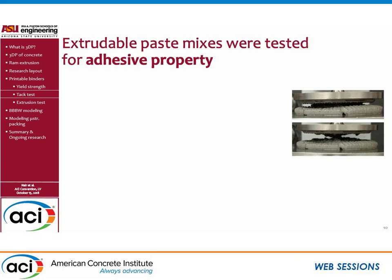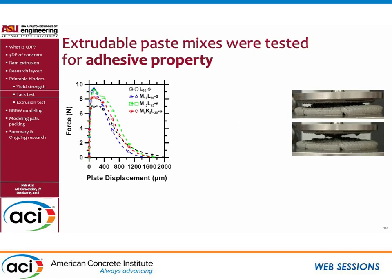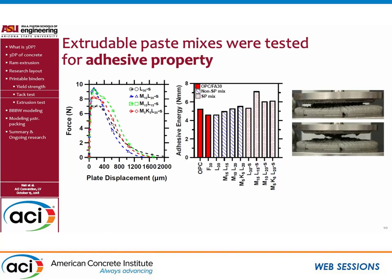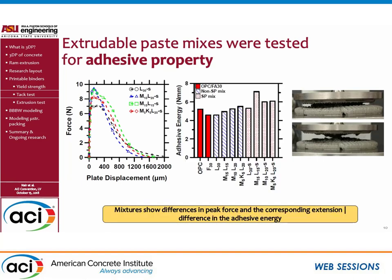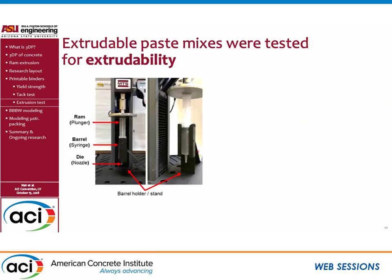For the adhesive property, we performed a tack test where material is placed between two plates which are then separated, and the load is recorded during separation. Different mixes show different peak forces and corresponding deformation before breaking. The adhesive energy is the area under the curve. For printable mixes, especially superplasticizer mixes, there is a slight increase in adhesive energy, which is a characteristic needed for intermixing of the layers — and those mixes are pretty successful in doing that.